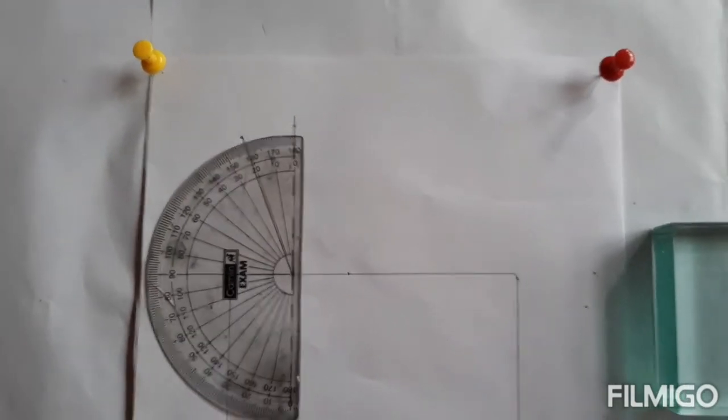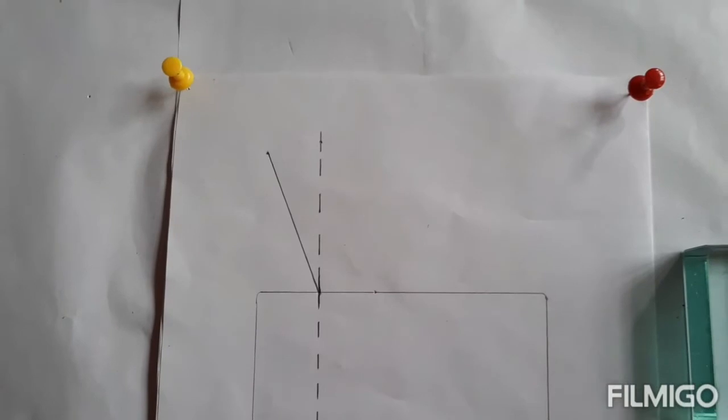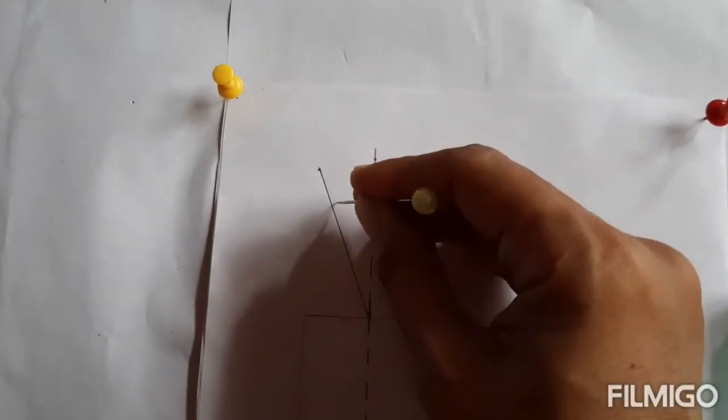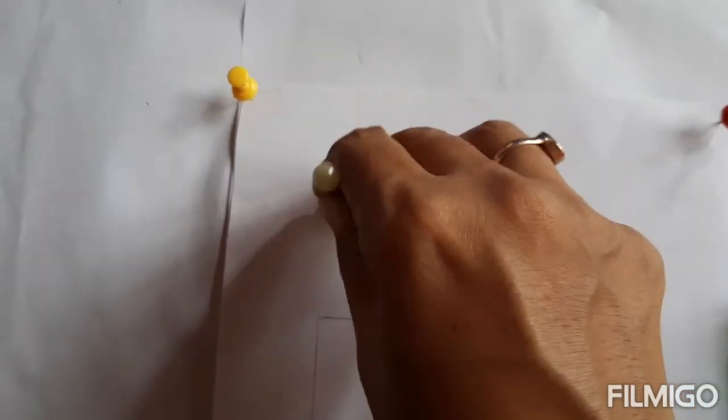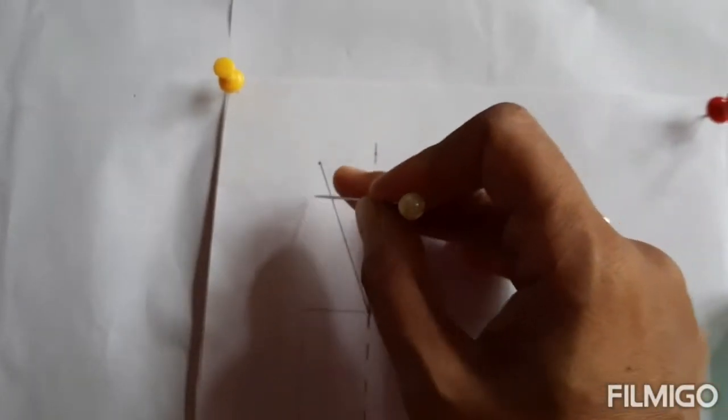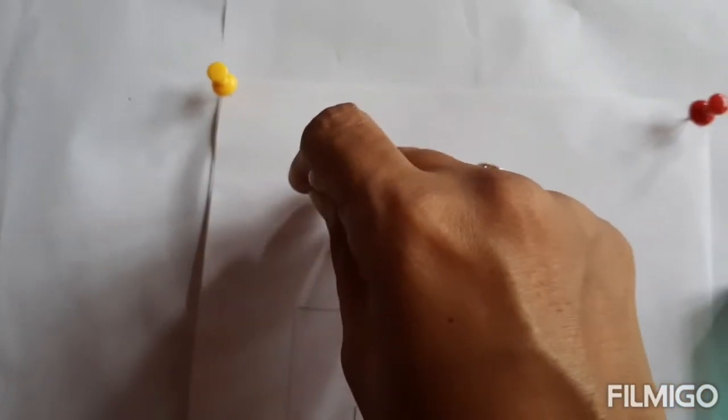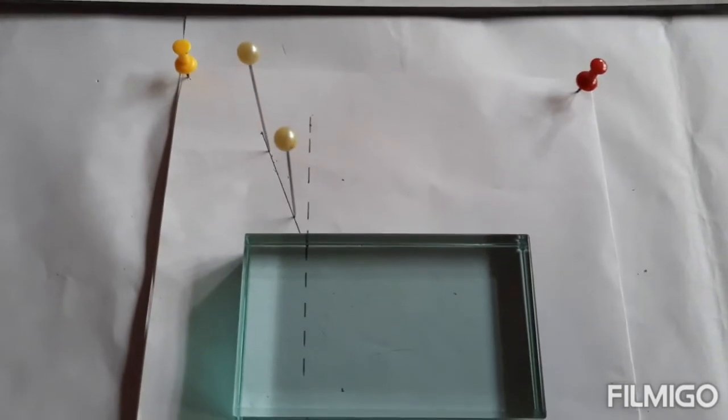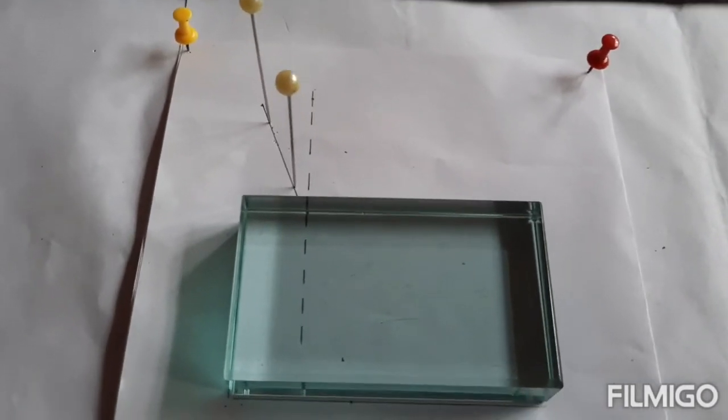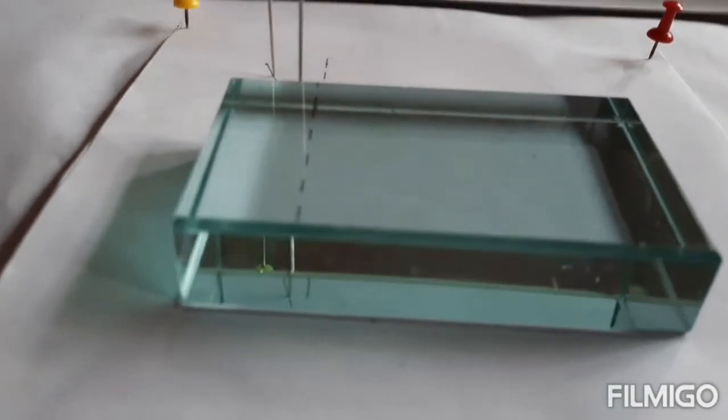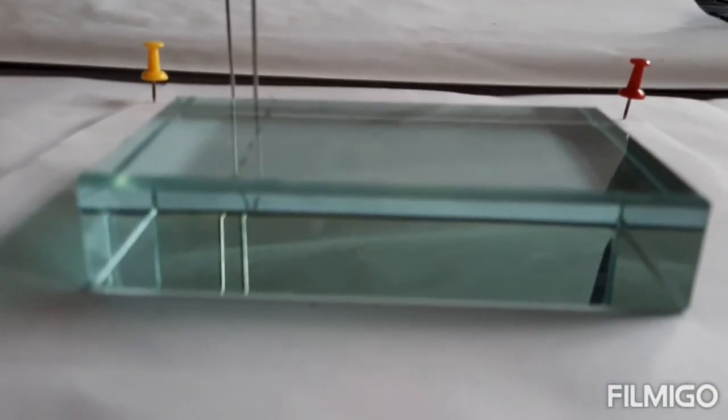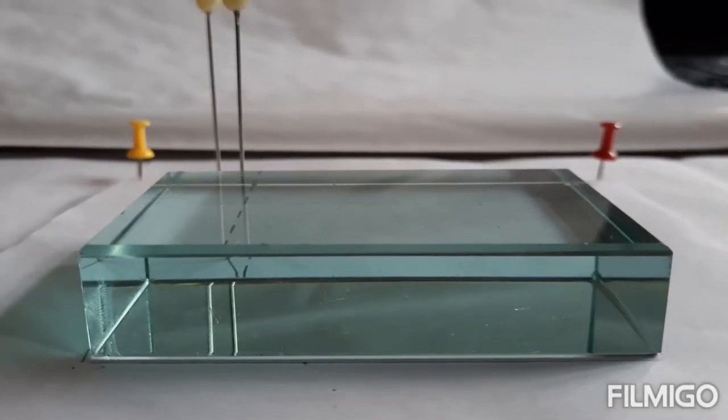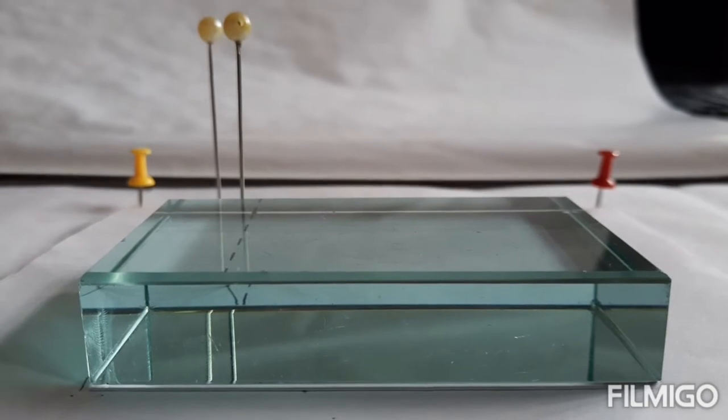Now we will remove this protractor and place two pins on the incident ray at proper gap. Two pins are placed on the incident ray and now after refraction through the glass block we can see the pins and both the pins are visible.